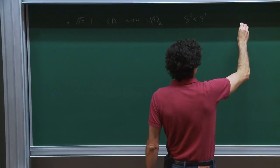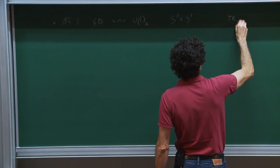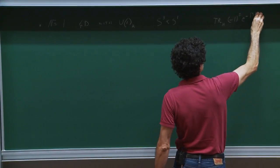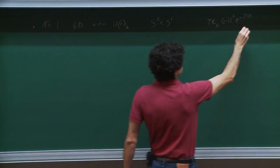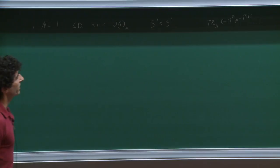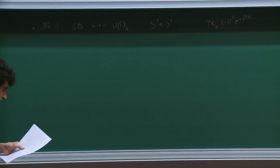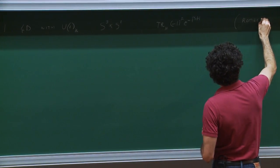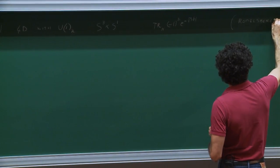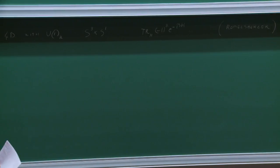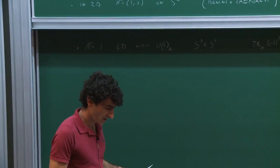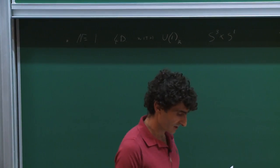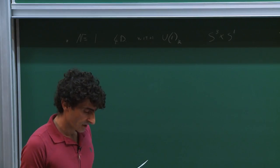One can define an index by taking the trace over the Hilbert space on S3 of minus one to the F times e to the minus beta H plus decorations. This index can be computed exactly; this was initiated by Romelsberger, even though the supersymmetric field theory on S3 times S1 was actually written earlier by Dolan and Osborn.